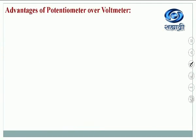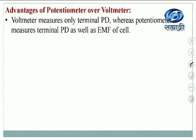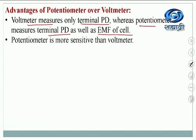What are the advantages of the potentiometer over the voltmeter? The voltmeter measures only terminal potential differences, whereas the potentiometer measures both terminal potential difference as well as the EMF of the cell. We cannot measure EMF by using a voltmeter. Also, the potentiometer is more sensitive than a voltmeter — the sensitivity can be increased by increasing the length of the potentiometer wire.